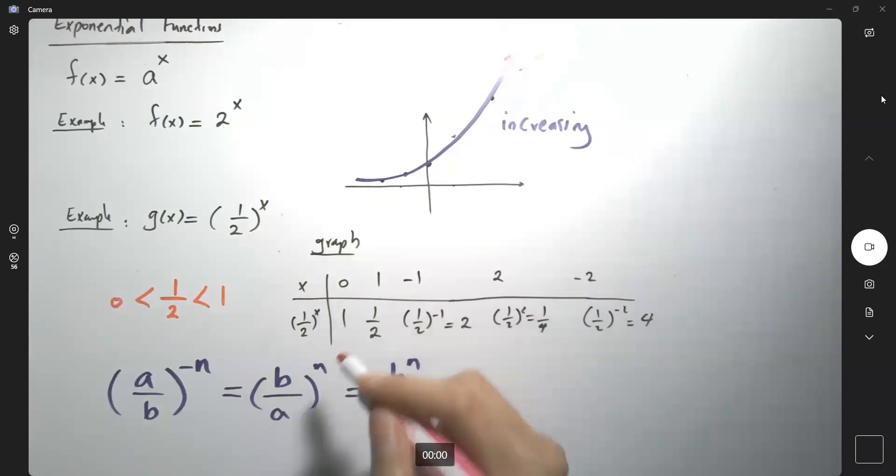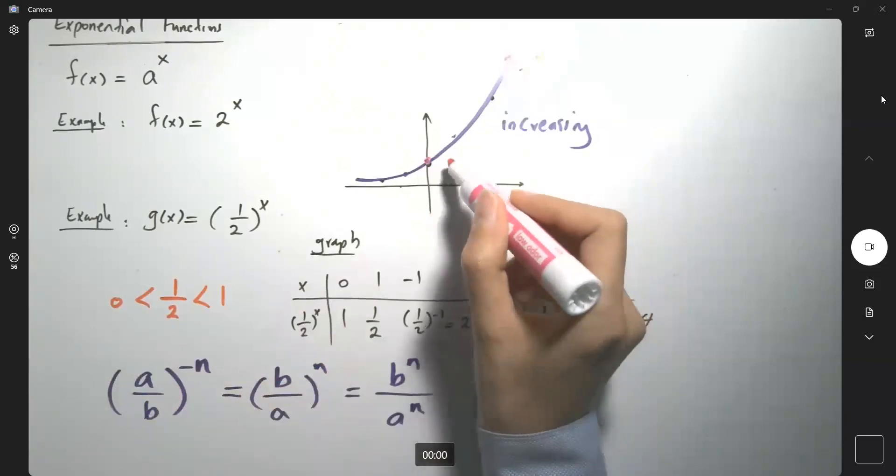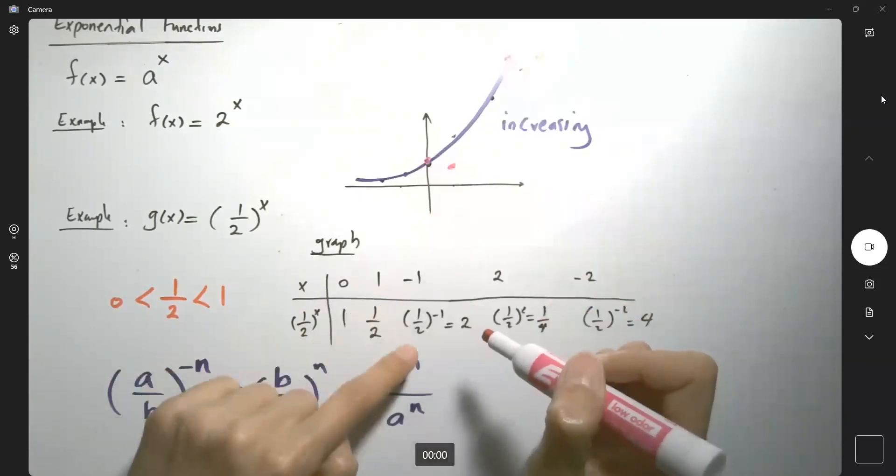So let's graph the function. 0 and 1, the same intersection with the y-axis. 1 and a half. At 1, you have a half. Negative 1 and 2.